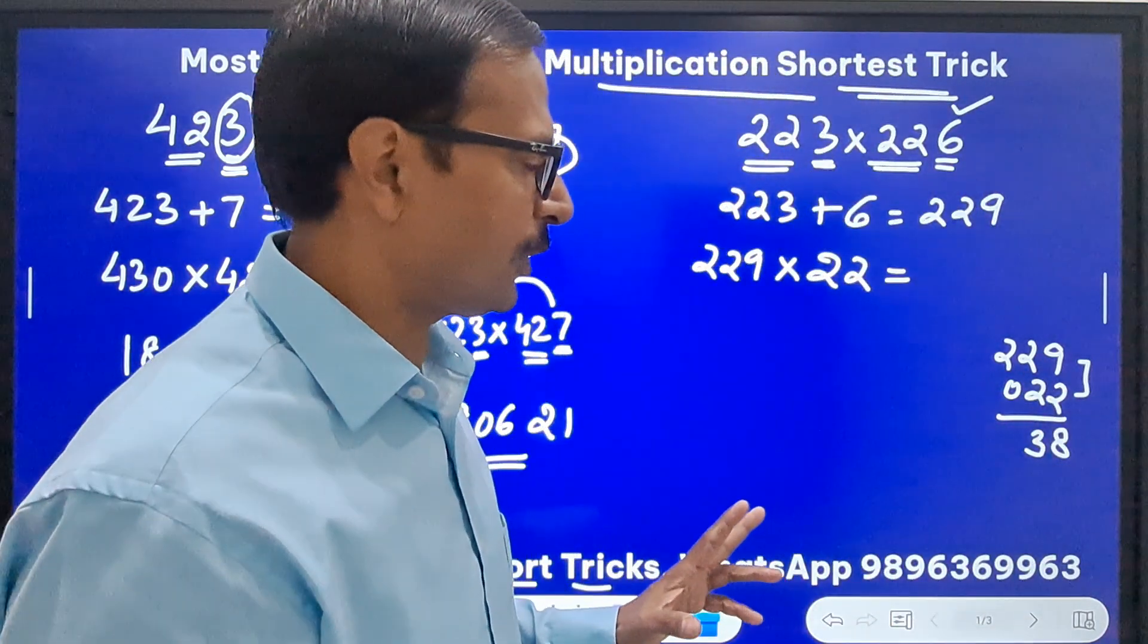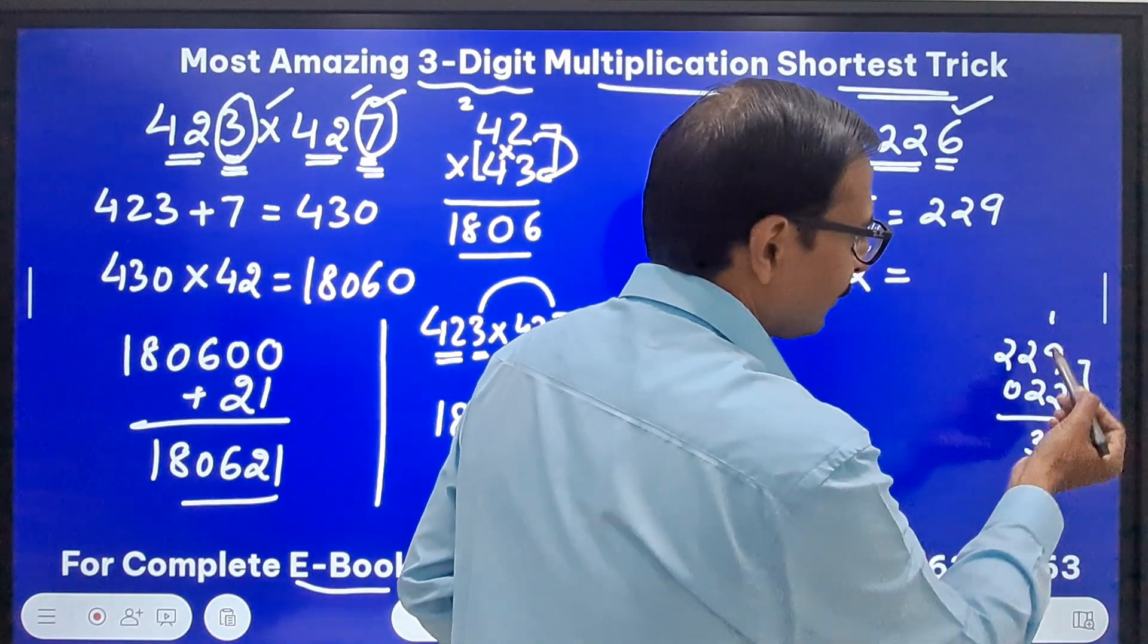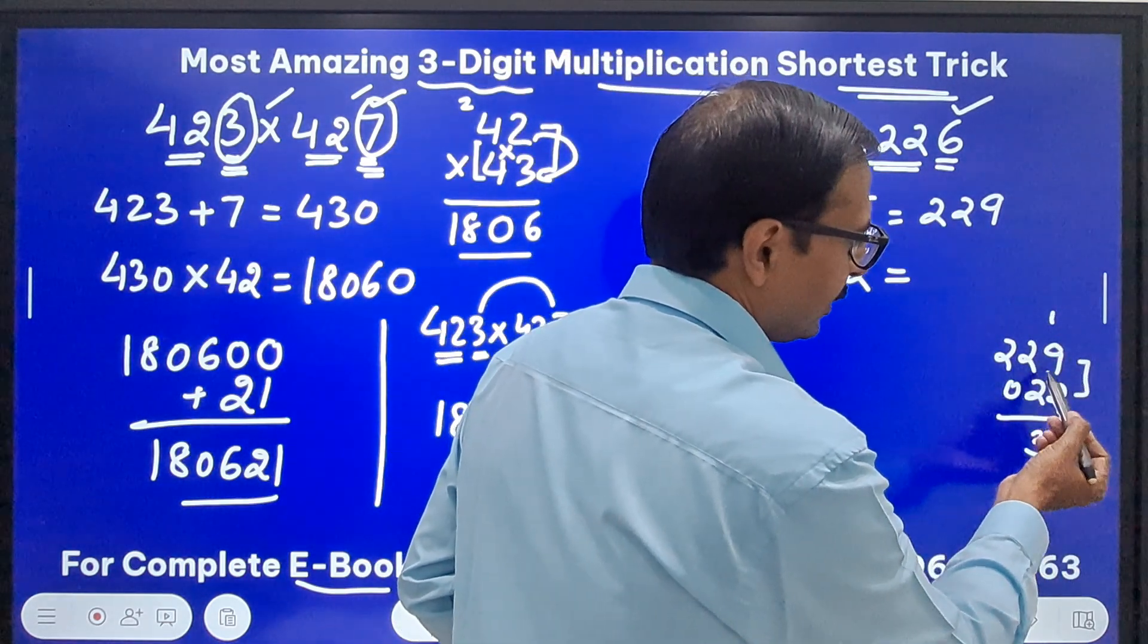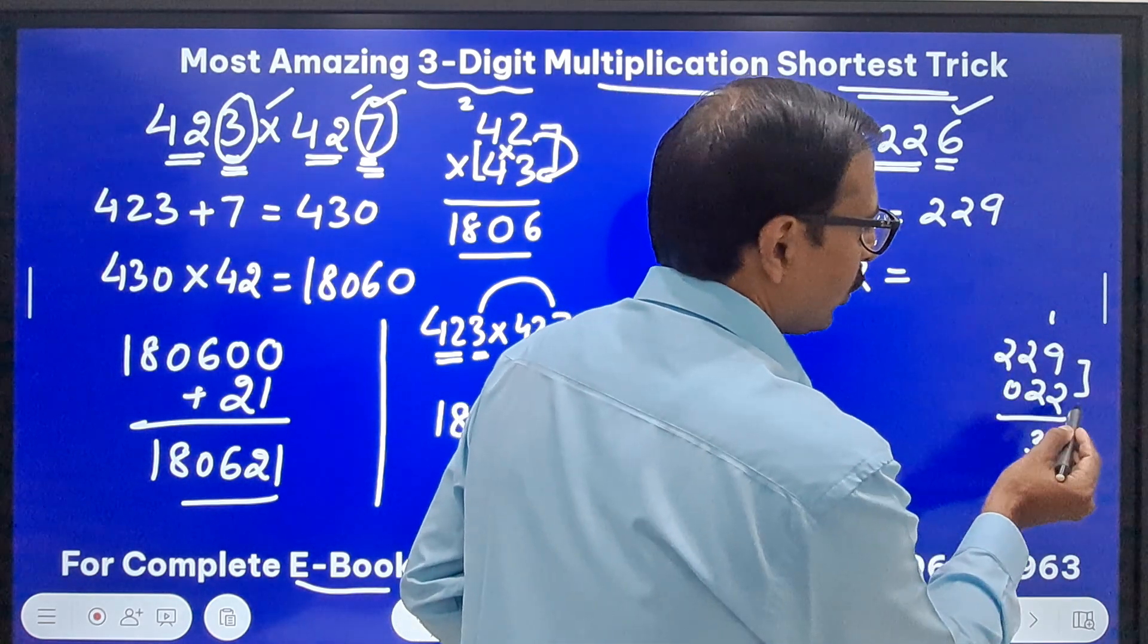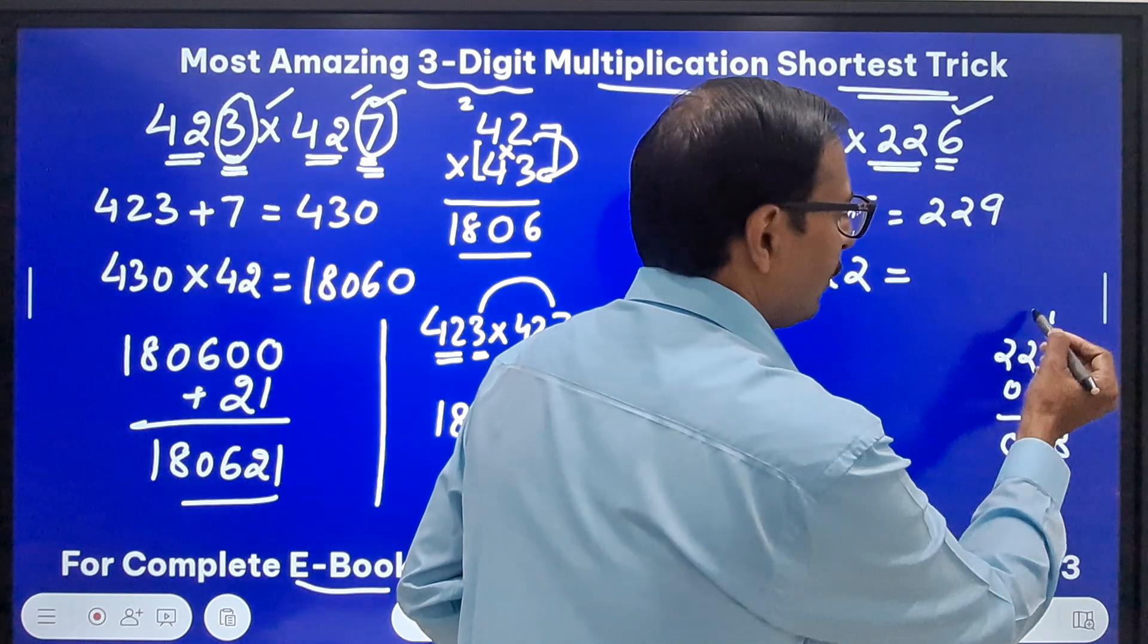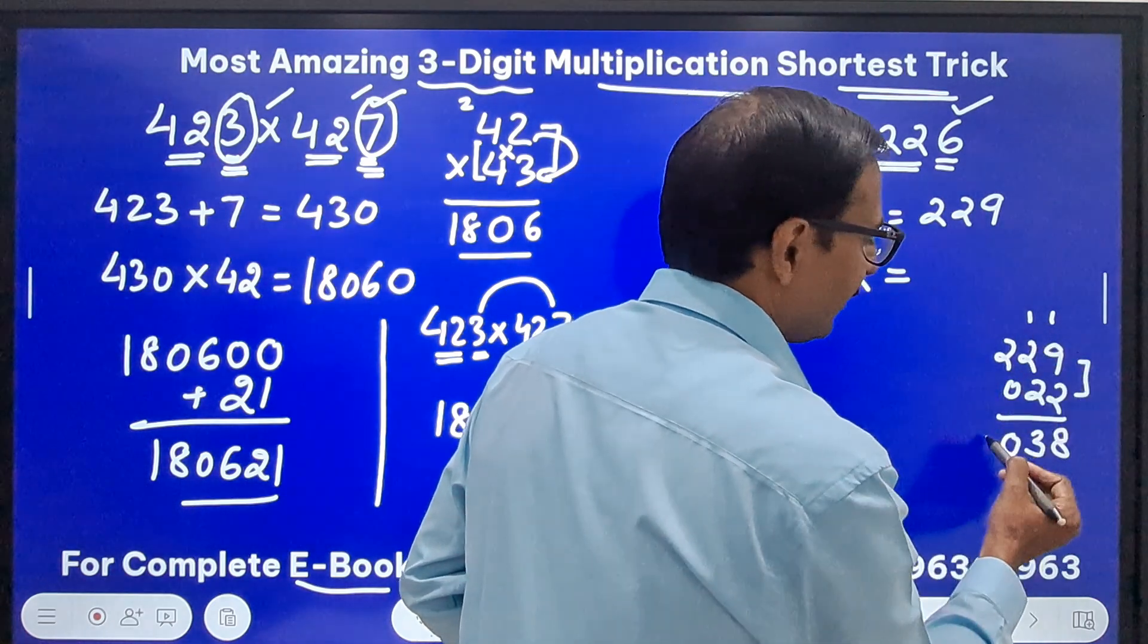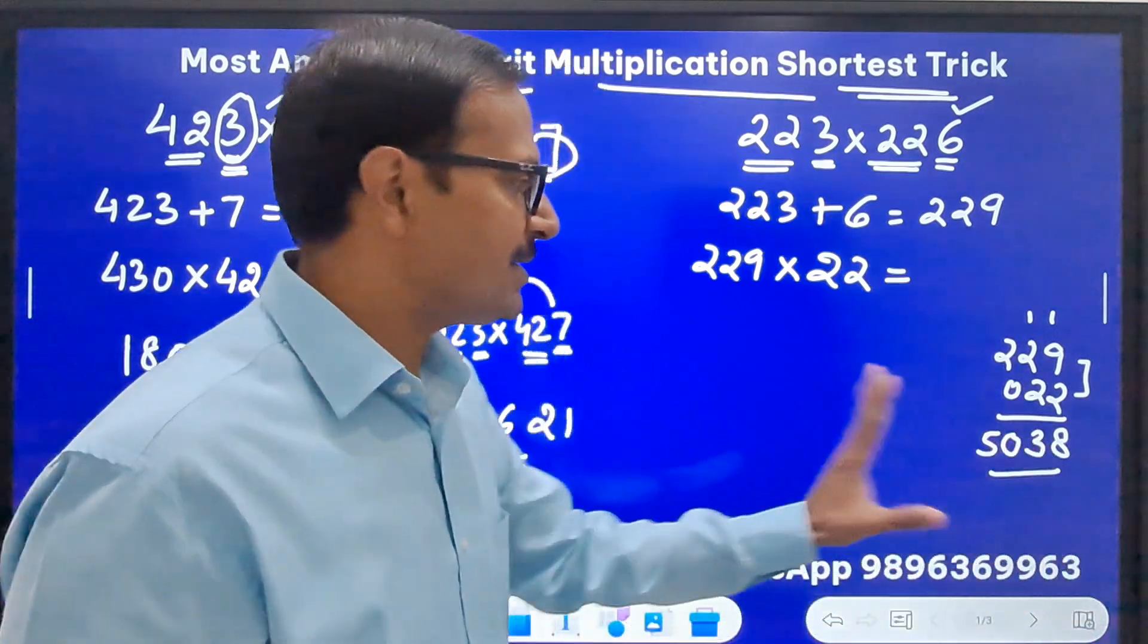4 and 3 carry, that is 4 and 3 carry, right. If I am not forgetting, 9 twos, I will tell you, 9 twos 18, 8, 1 carry. 18 and 4, 22, 23, 3, 2 carry. So 4 plus 2, 6 and 4, 10, 0, 1 carry. And then 4 plus 1, 5. So I have applied the vertical and crosswise to find this solution.